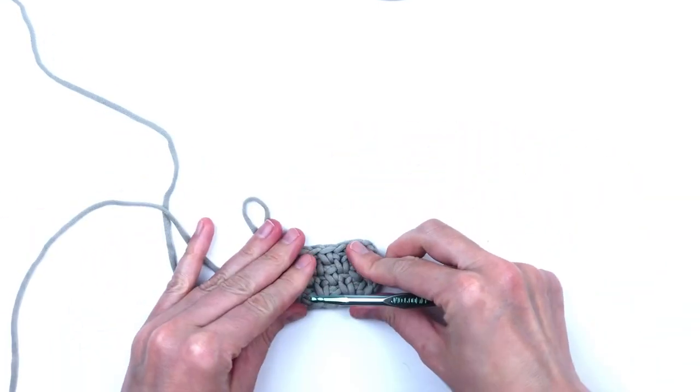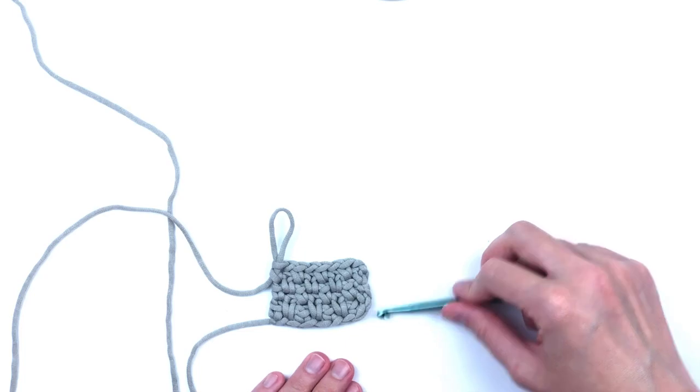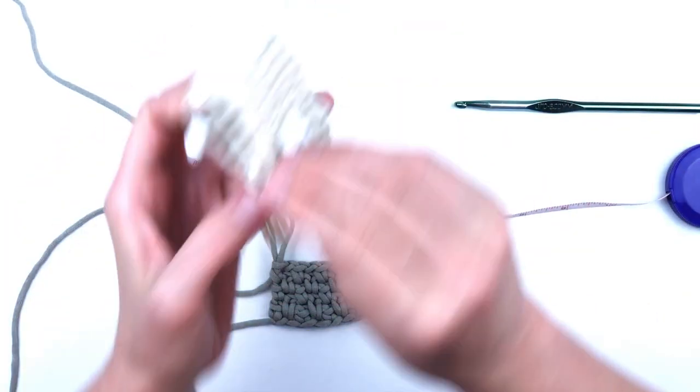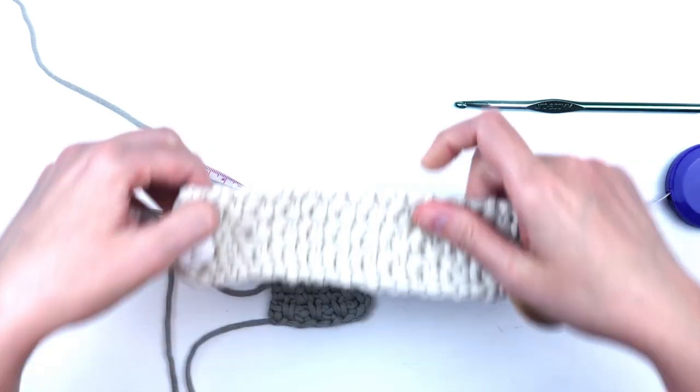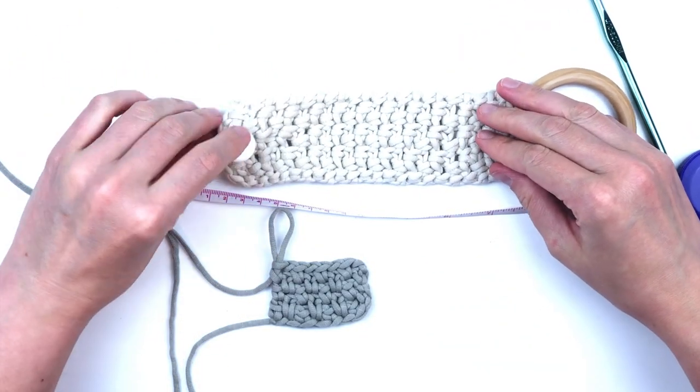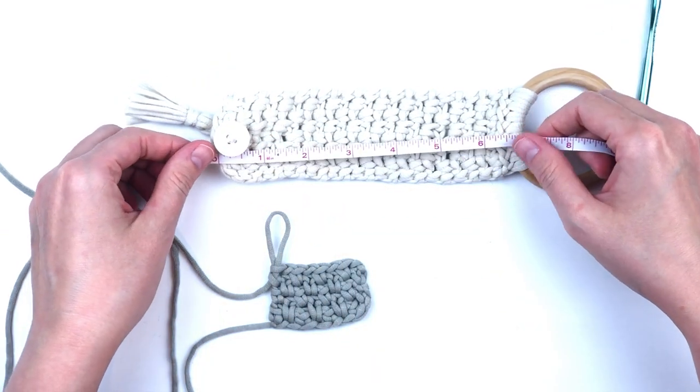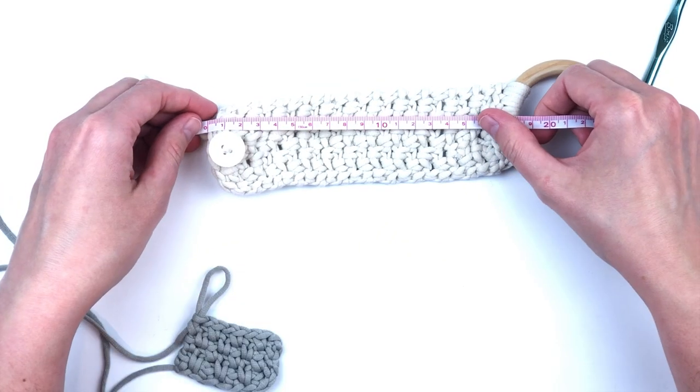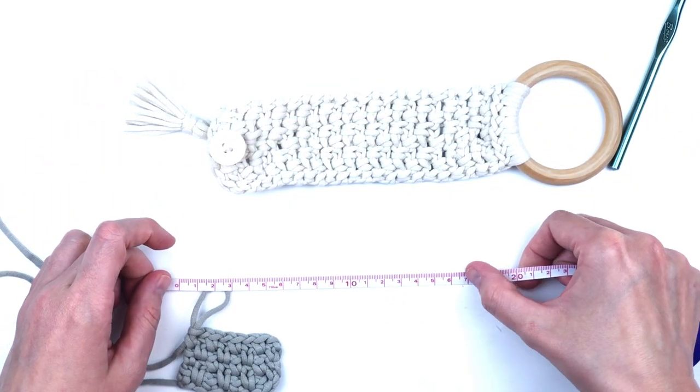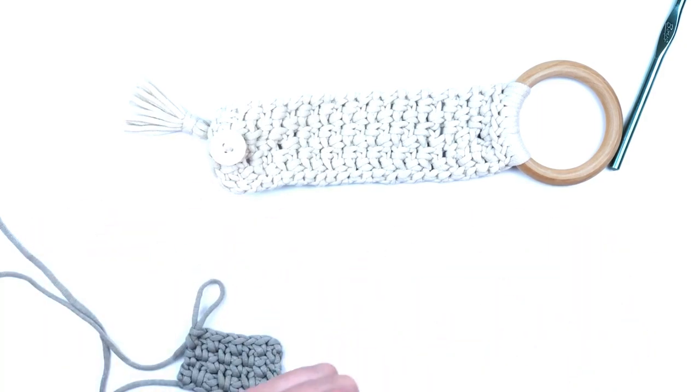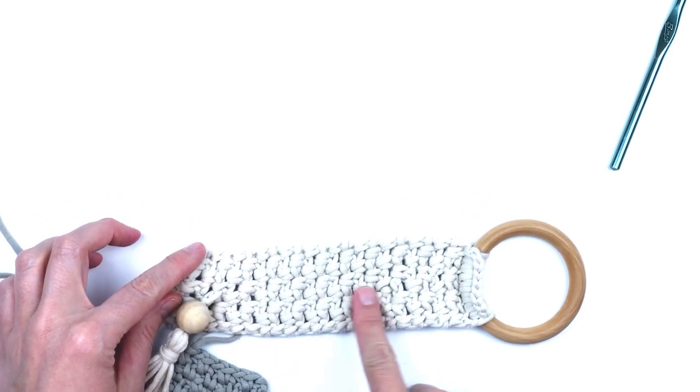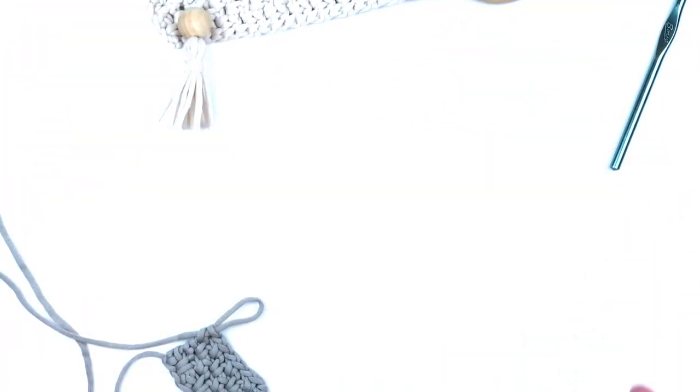Now we are going to continue this pattern until it makes a certain measurement. My rule of thumb is about seven inches, and I will show you here. This is a good length for me. I started out too long on this one and I had to shorten it, but it's about seven inches or about 17 centimeters. Continue in this fashion until your piece measures about seven inches. I will meet you when I am at that point.